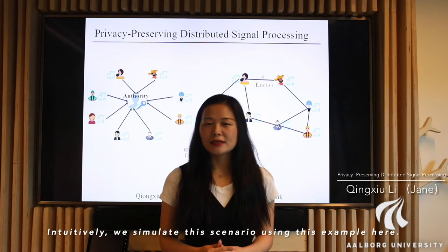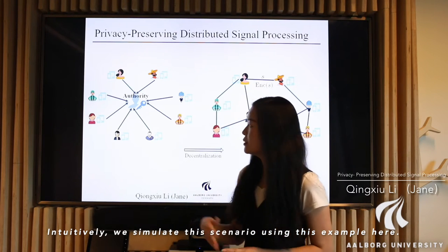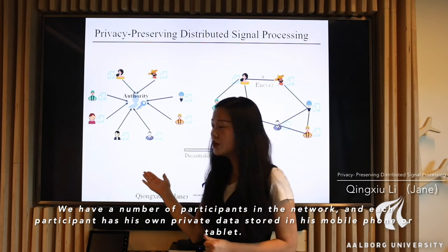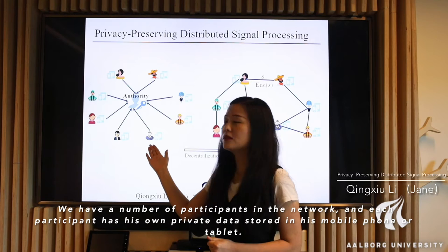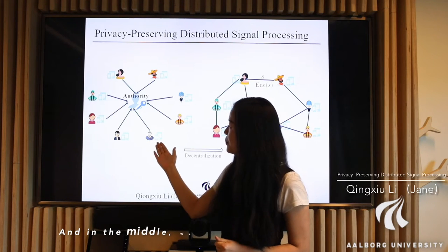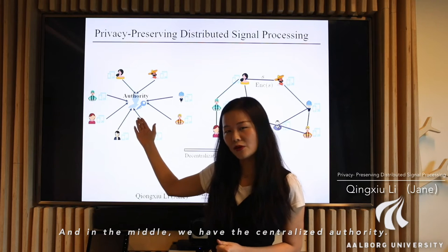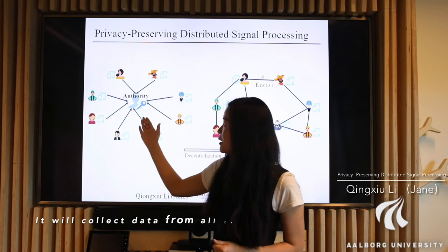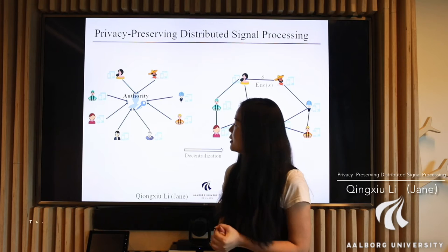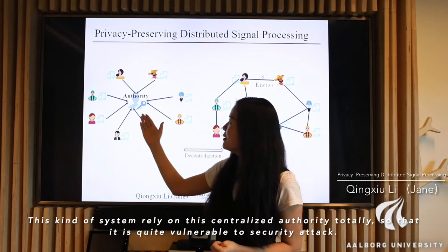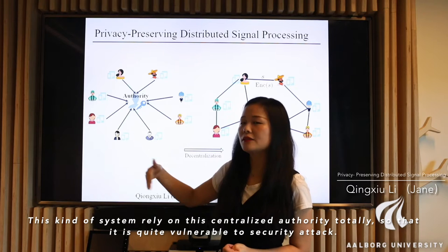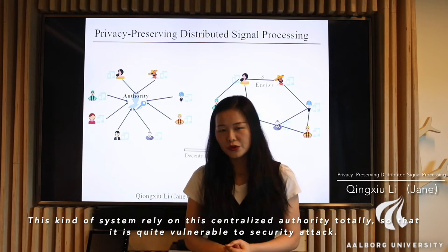Intuitively, we can simulate this scenario using this example here. We have a number of participants in the network, and each participant has its own private data stored in his mobile phone or tablet. And in the middle, we have the centralized authority. It will collect the data from all the participants and conduct the computations. This kind of system relies on this centralized authority totally, so that it is quite vulnerable to security attack.